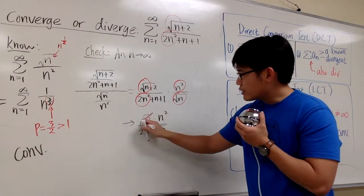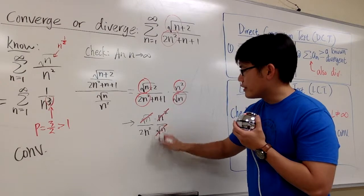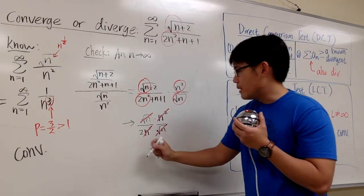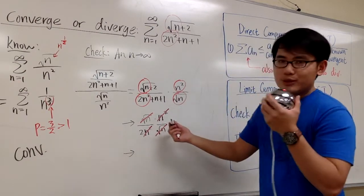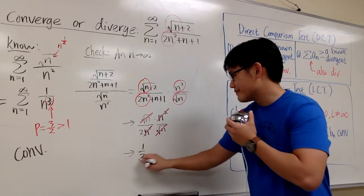As you can see, the square root of n here cancels with that one, and then the n squared here cancels with that one. And namely, altogether, we just have 1 over 2. That's all.